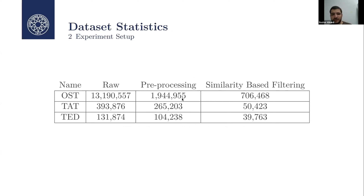Here are the numbers of kept pairs after each step. Semantic similarity-based filtering removed a large portion of pairs in accordance with human-annotated ground truth. This suggests that many of the pairs obtained after translating were not actually paraphrases.